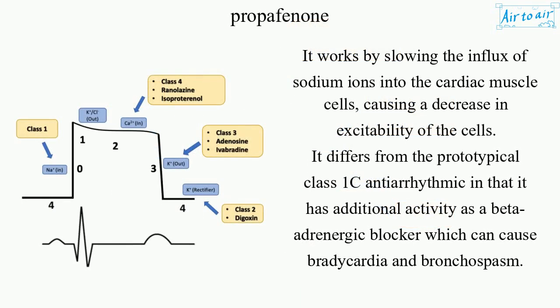It works by slowing the influx of sodium ions into the cardiac muscle cells, causing a decrease in excitability of the cells. It differs from the prototypical class 1C antiarrhythmic in that it has additional activity as a beta-adrenergic blocker, which can cause bradycardia and bronchospasm.